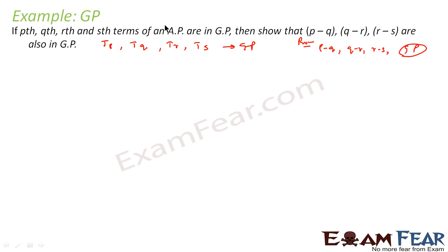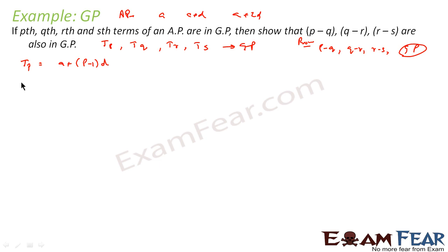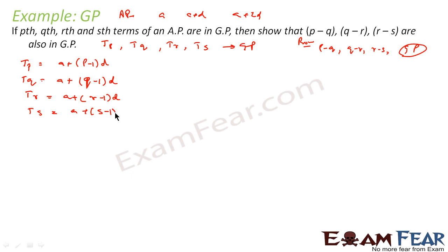So tp, tq, tr, ts are terms of an AP and these four terms are in GP. For the AP with first term a and common difference d: tp = a + (p−1)d, tq = a + (q−1)d, tr = a + (r−1)d, ts = a + (s−1)d.